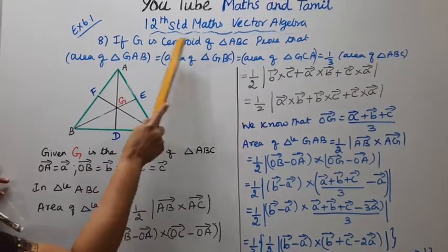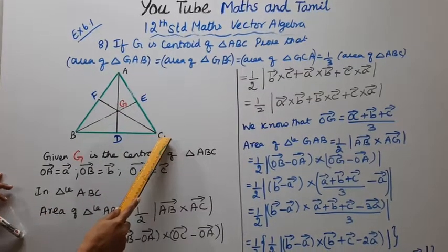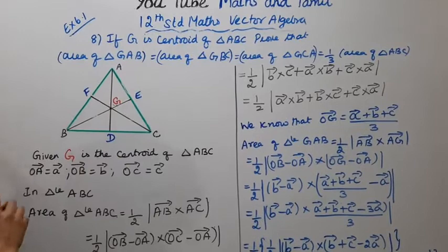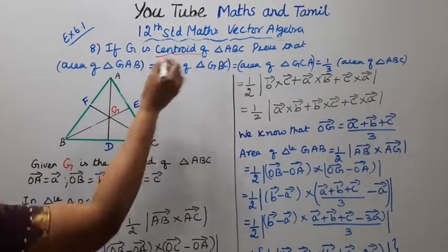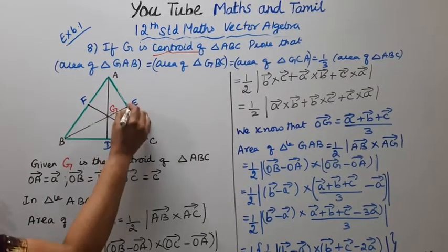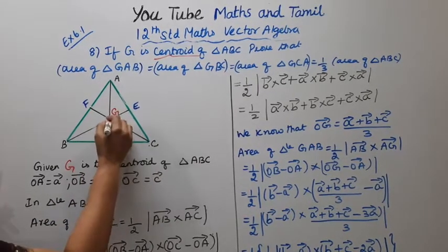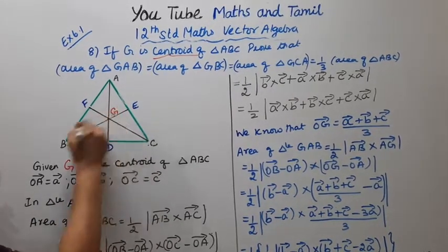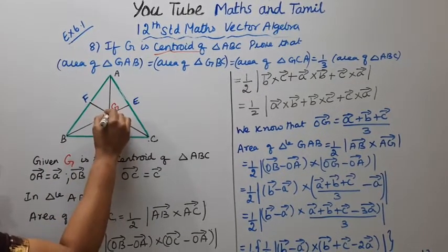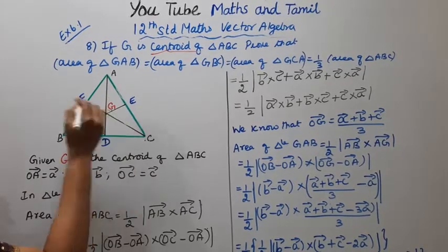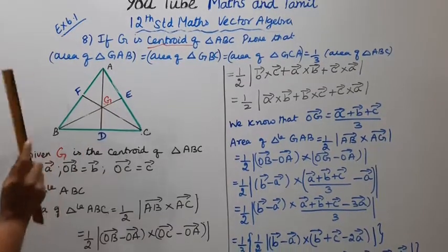G is the centroid of triangle ABC. The medians AD, BE, and CF meet at the centroid point G. The point where the three medians meet is the centroid, so G is the centroid.